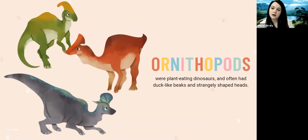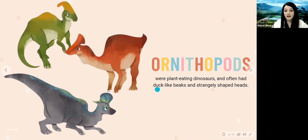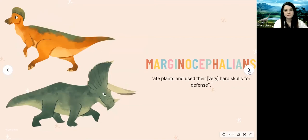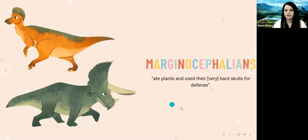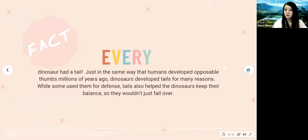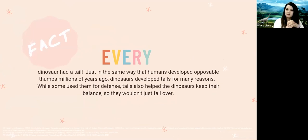Then we have Ornithopods, part of the Ornithopoda group. They were plant-eating dinosaurs and they often had duck-like beaks and really strangely shaped heads. And then we have Marginocephalia — the Marginocephalians also ate plants and had very hard skulls that they used for defense. The Triceratops is a familiar example of this group. One notable quality about every single dinosaur was that every one of them had a tail — tails helped dinosaurs keep their balance so they wouldn't fall over.